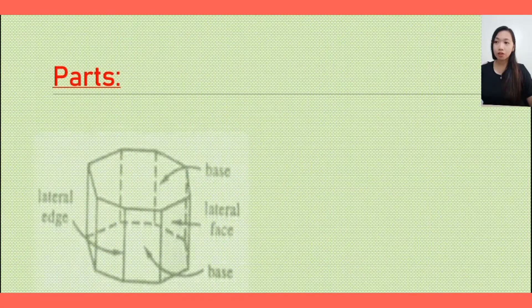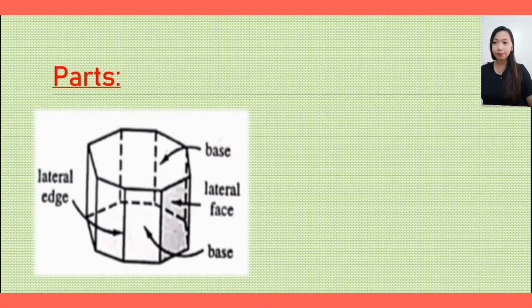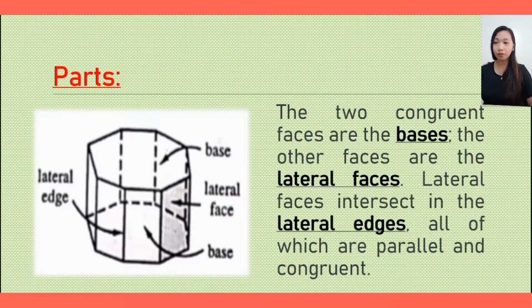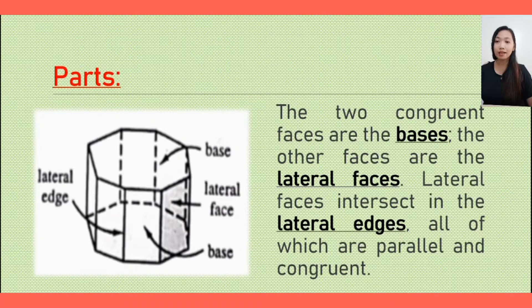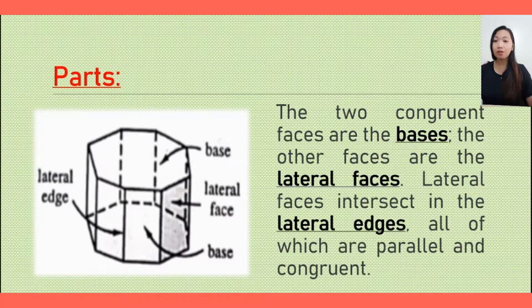The parts of the prisms are shown in the figure. As you can see, the two congruent faces are the bases, which can be found either in the upper part or the lower part. The other faces are called the lateral faces — these are the faces on the sides. Lateral faces intersect at the lateral edges, which is the intersection of all the lateral faces. All the faces are parallel and congruent.